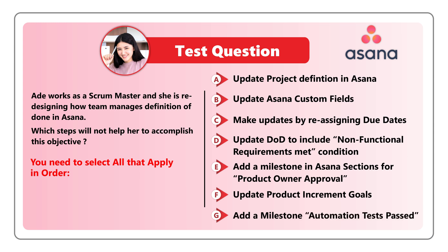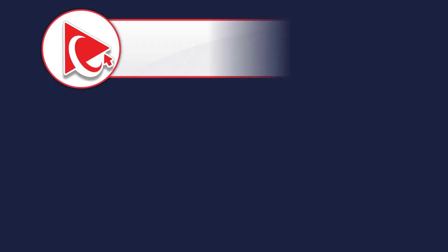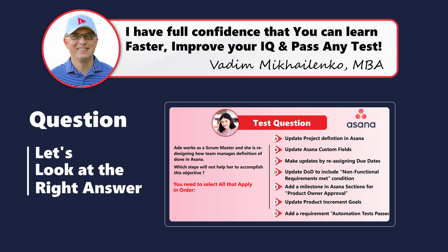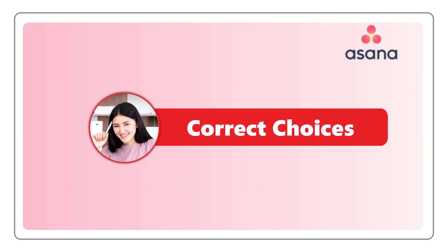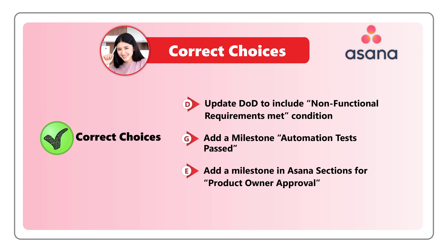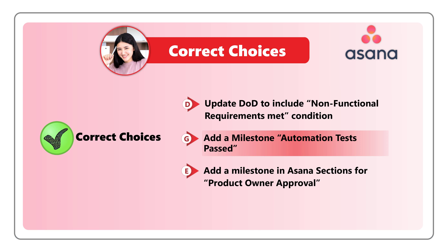Take a close look — maybe pause to see if you can select all the right answers. Based on my experience, I think the correct choices are D, G, and E. Choice D: Update DoD — definition of done — to include non-functional requirements met condition. Choice G: Add a milestone — automation tests passed. And Choice E: Add a milestone in Asana sections for product owner approval.